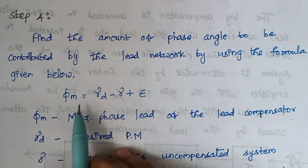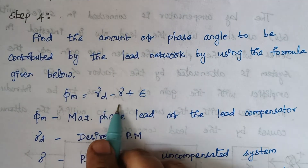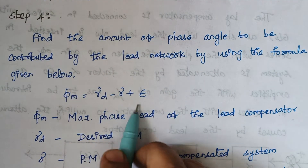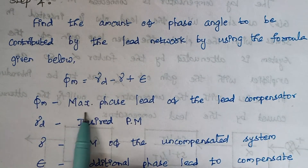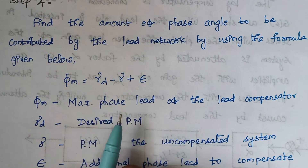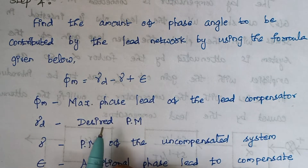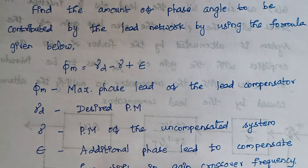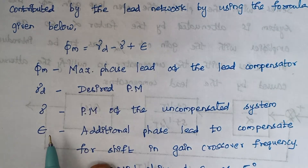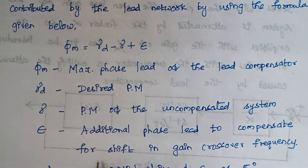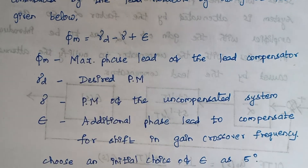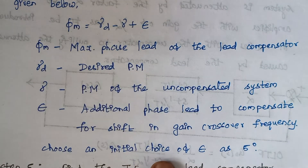The formula is: phi_m = gamma_d minus gamma plus epsilon. Here phi_m is the maximum phase lead of the lead compensator, gamma_d is the desired phase margin given in the problem, gamma is the phase margin of the uncompensated system, and epsilon is the additional phase lead to compensate for the shifting of the gain crossover frequency. Usually the value of epsilon is taken as 5 degrees.